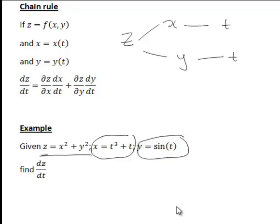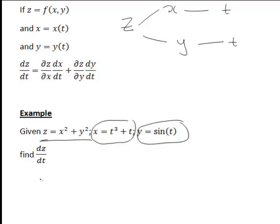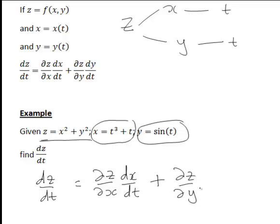We want to find the full derivative dz/dt. So this is a direct application of this rule: that will be ∂z/∂x times dx/dt plus ∂z/∂y times dy/dt. Let's work out each of these derivatives in turn.